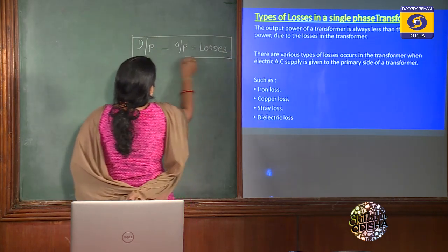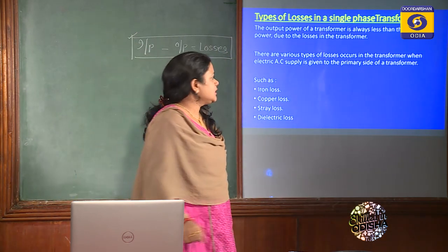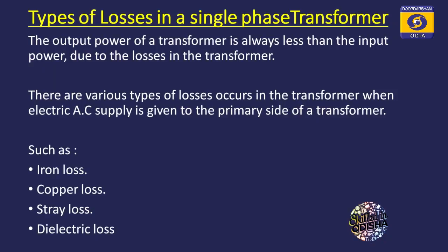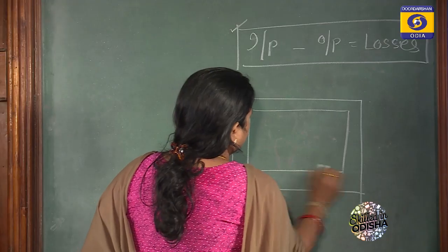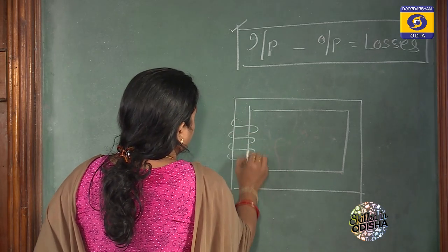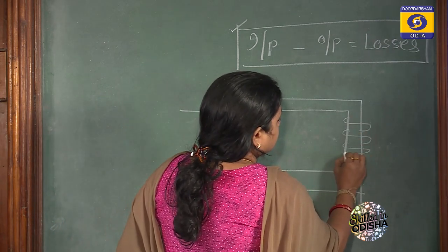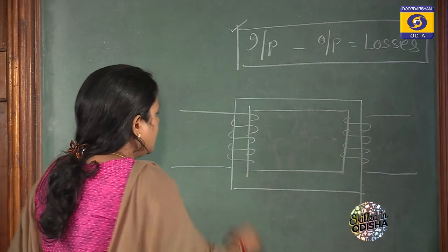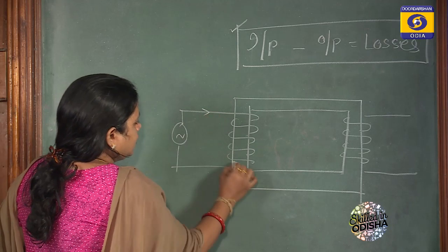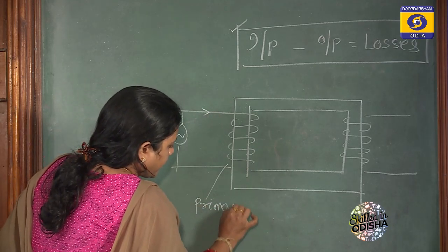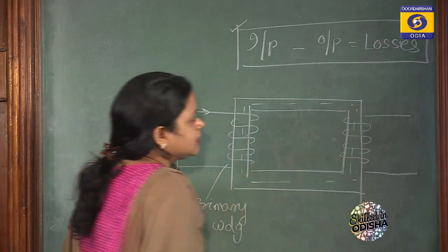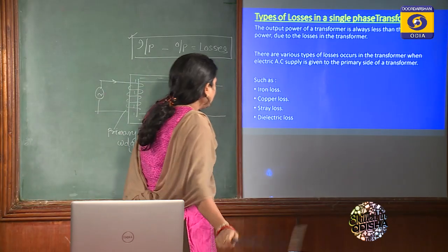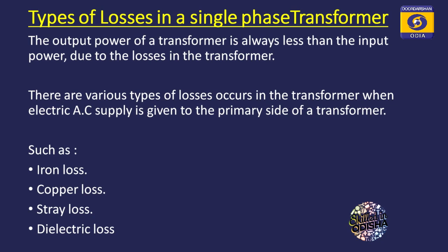There are various types of losses that occur in the transformer when AC supply is given to the primary side of the transformer. When we give AC supply, this is the core of the transformer. This is the primary winding and this is the secondary winding. There occur some losses: iron loss, copper loss, stray loss, and dielectric losses.